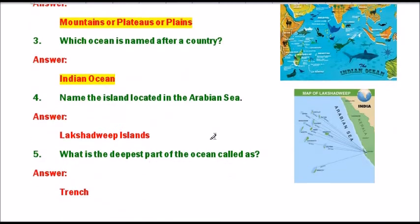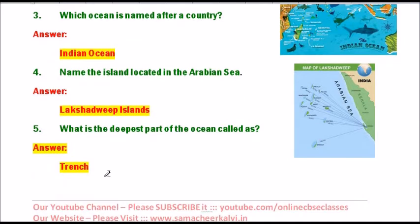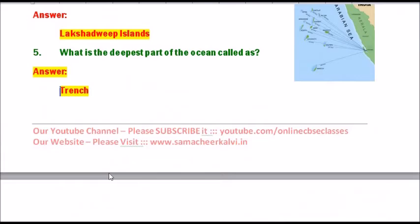Question number 4: Name the island located in the Arabian Sea. It is the Lakshadweep Islands, located in the Arabian Sea. Question number 5: What is the deepest part of the ocean called? The answer is a trench. Trench is the deepest part of the ocean.